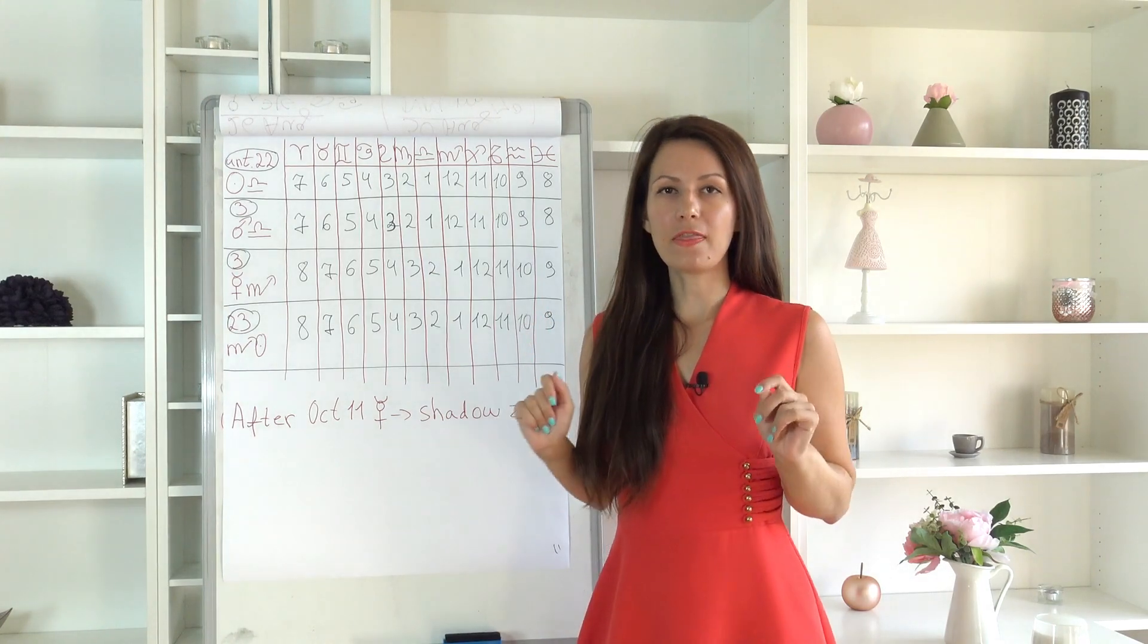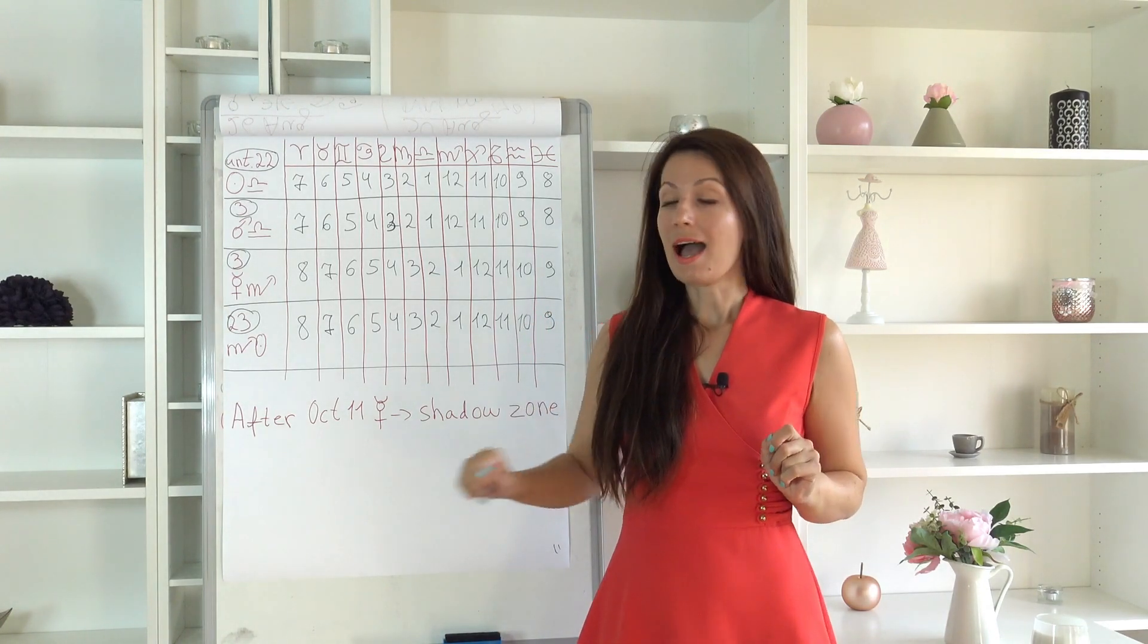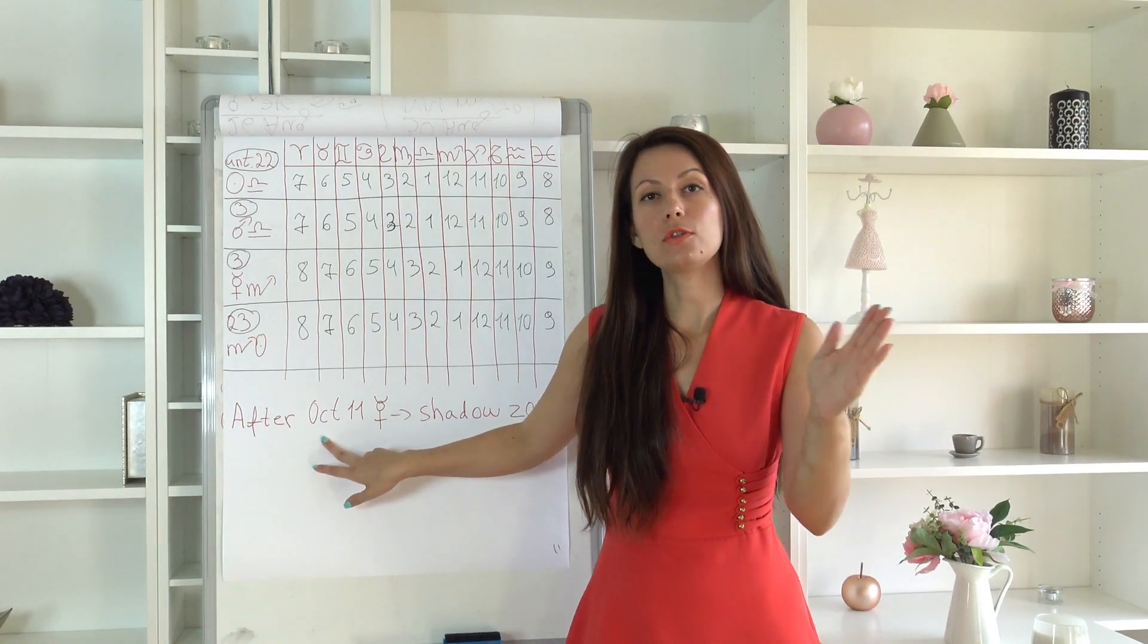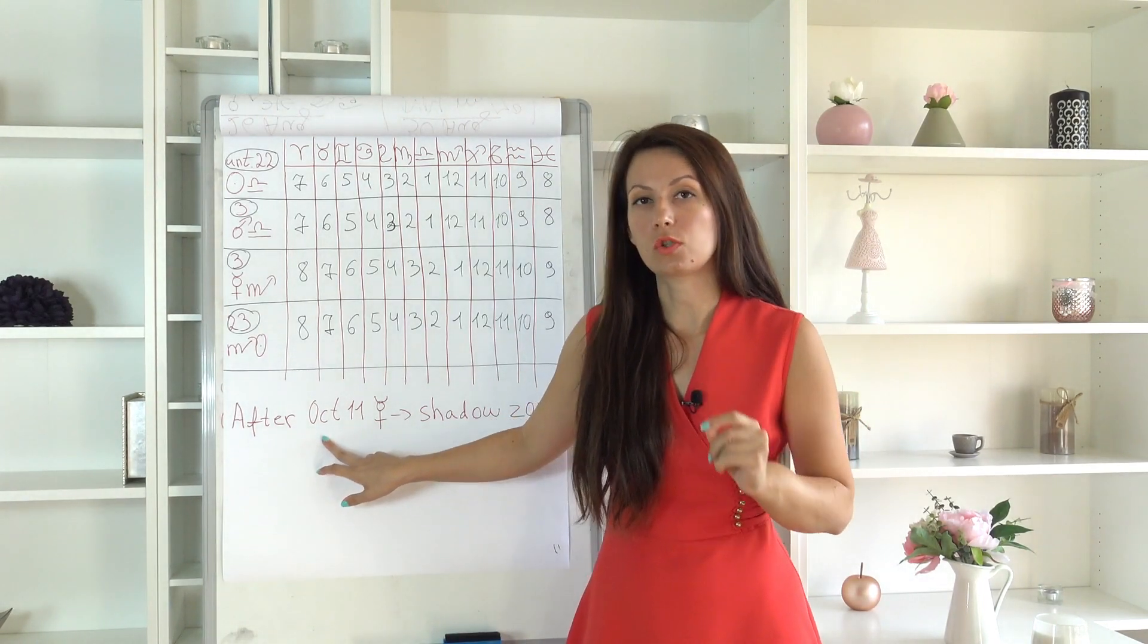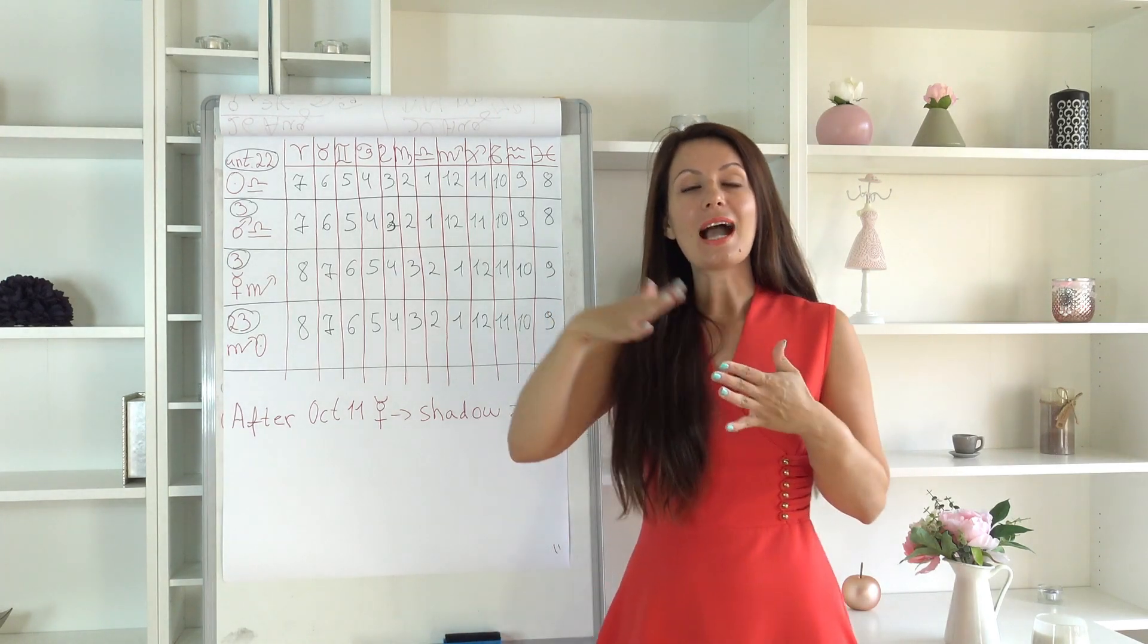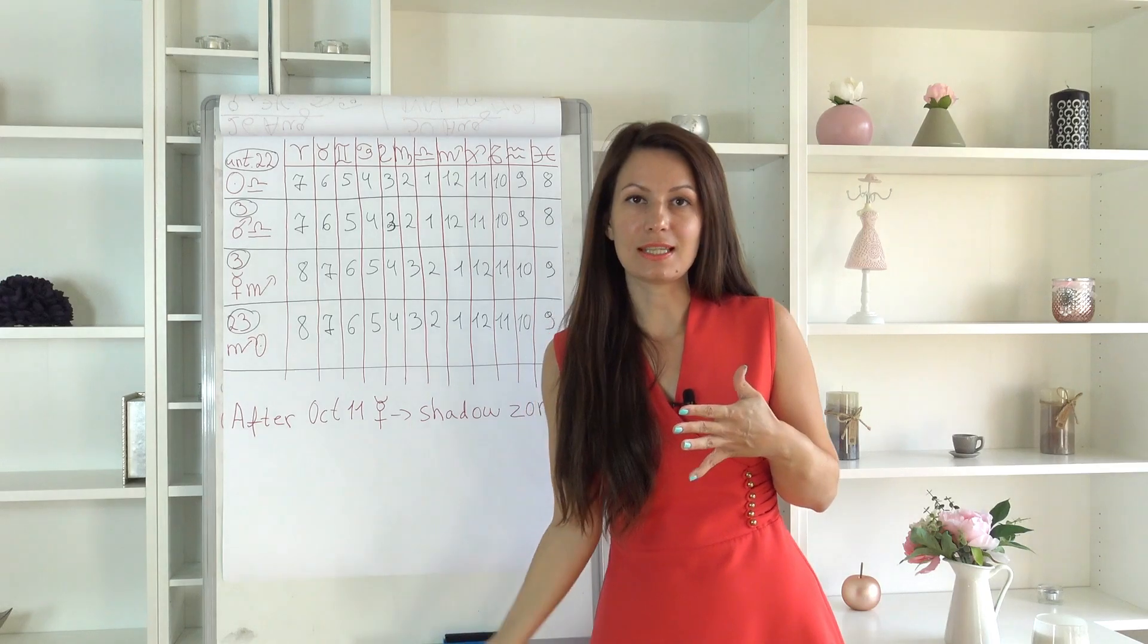And one thing which is very important, after the 11th of October, Mercury enters the shadow zone. What does it mean, the shadow zone? Basically, this means that after certain time, Mercury will be retrograde in the same degrees.